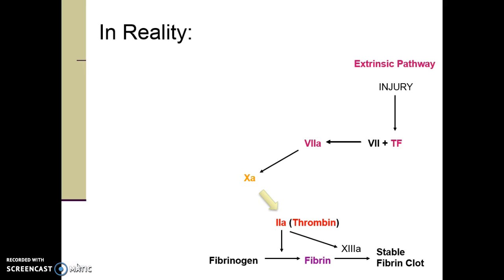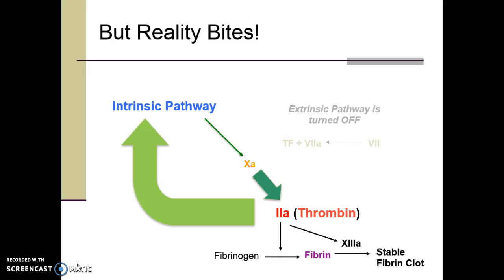You may wonder why the intrinsic pathway is even necessary if tissue factor directly activates the extrinsic pathway after tissue injury, which then directly activates the common pathway to generate thrombin and fibrin clot. That is because, in real life, once the extrinsic pathway is activated and there is an initial burst of thrombin made through the common pathway, the extrinsic pathway is rapidly shut down. Therefore, in order to propagate further thrombin generation and clot formation through the common pathway after the extrinsic pathway is turned off, thrombin must directly activate the intrinsic pathway by activating factors 11 and 8, as well as the common pathway by activating more factor 5.